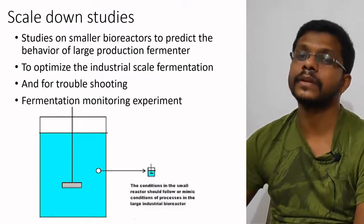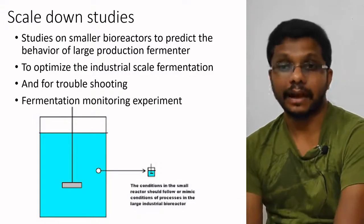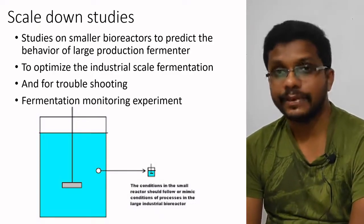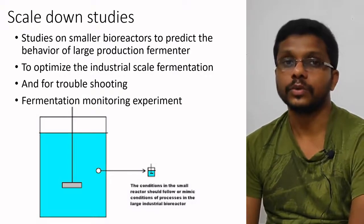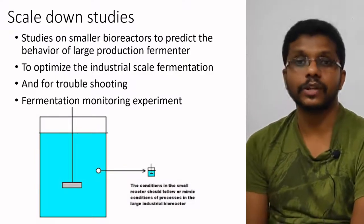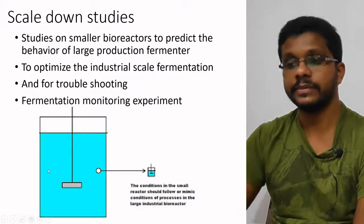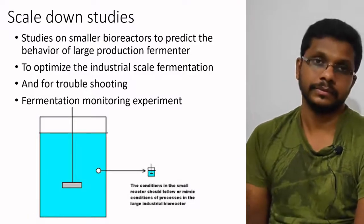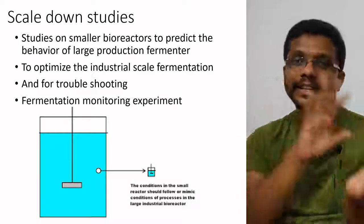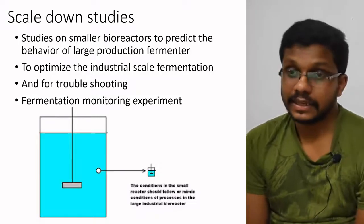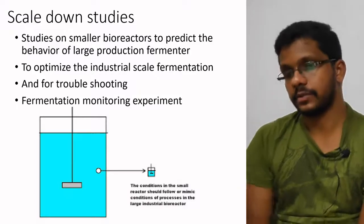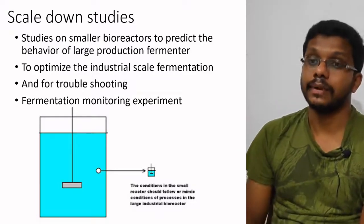The scale-up window is a useful statistical method. The opposite of scale-up is scale-down — when large-scale studies are ongoing and we need to evaluate performance, troubleshoot, or optimize, we use scale-down studies on small bioreactors to predict the behavior of large production fermenters. For example, if we want to change a carbon source in a large fermenter, we first change it in a small fermenter, develop a proof of concept, then apply it at large scale. Scale-down is used for optimization, troubleshooting, and ongoing fermentation monitoring.